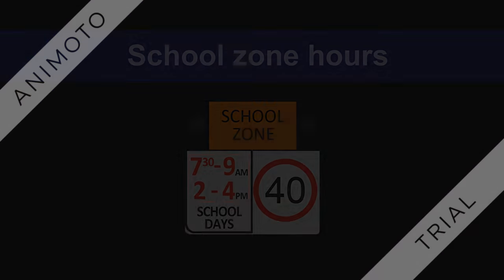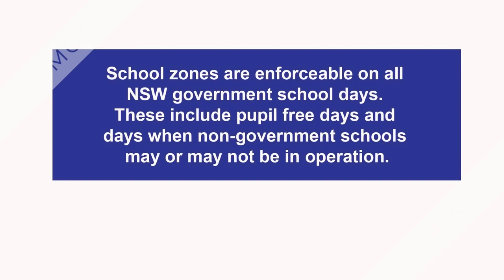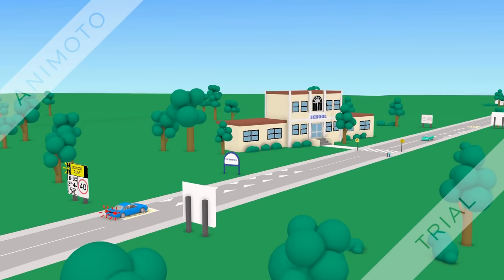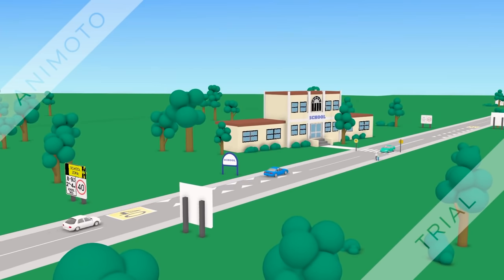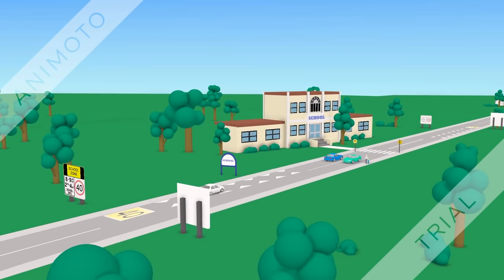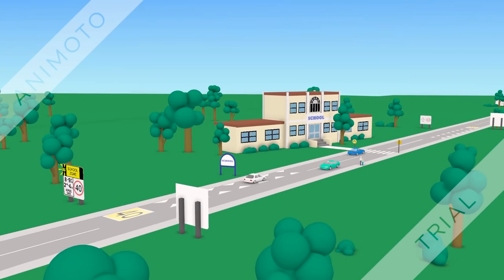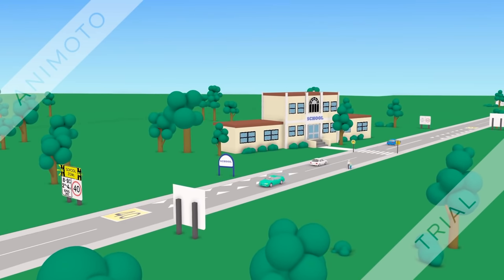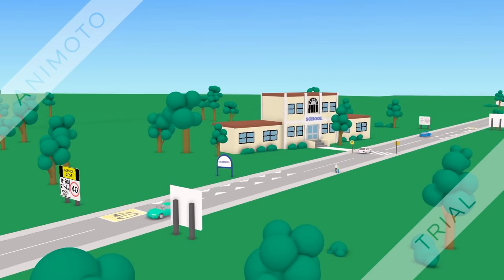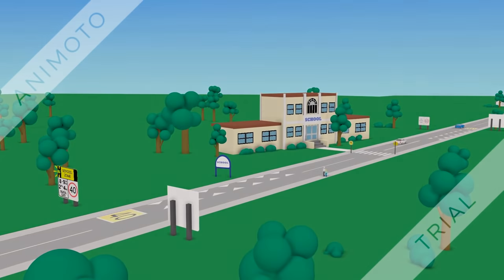School zones are enforceable on all New South Wales government school days, including pupil-free days and on days when non-government schools may or may not be in operation. School zones operate and are enforced on pupil-free days because pupil-free days can vary from school to school. Consistent operation of school zones aims to reduce driver confusion, which improves the safety of school children.